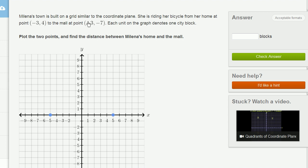Malena's town is built on a grid similar to the coordinate plane. She is riding her bicycle from her home at point negative 3, comma 4 to the mall at point negative 3, comma negative 7. Each unit on the graph denotes one city block. Plot the two points and find the distance between Malena's home and the mall.